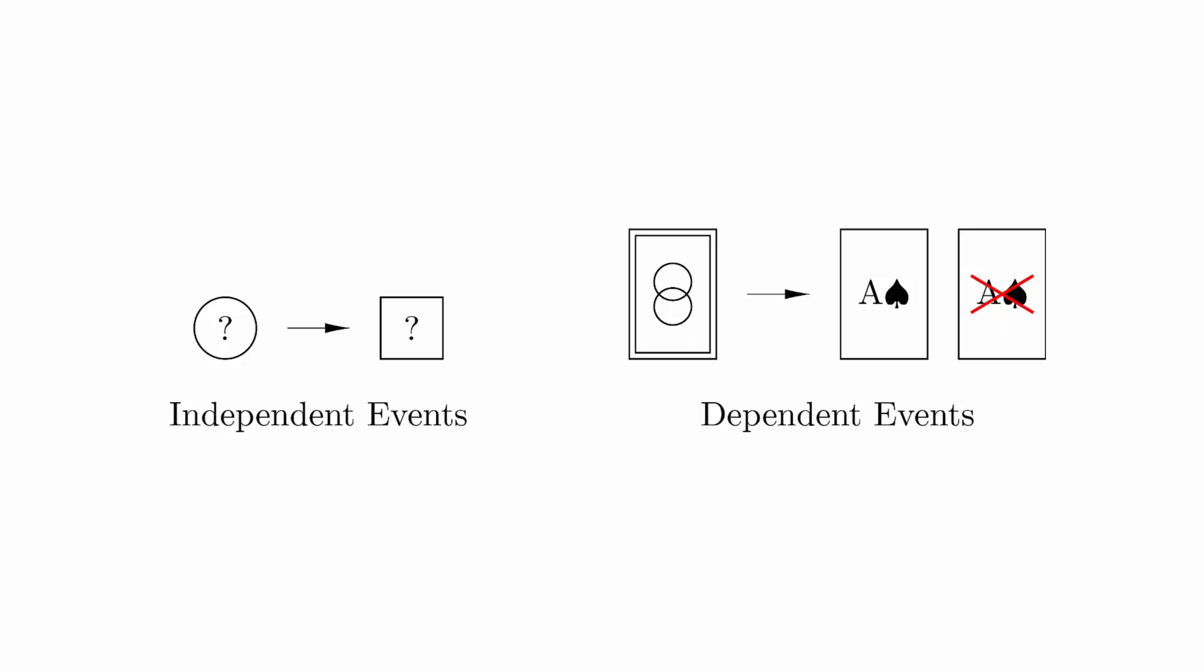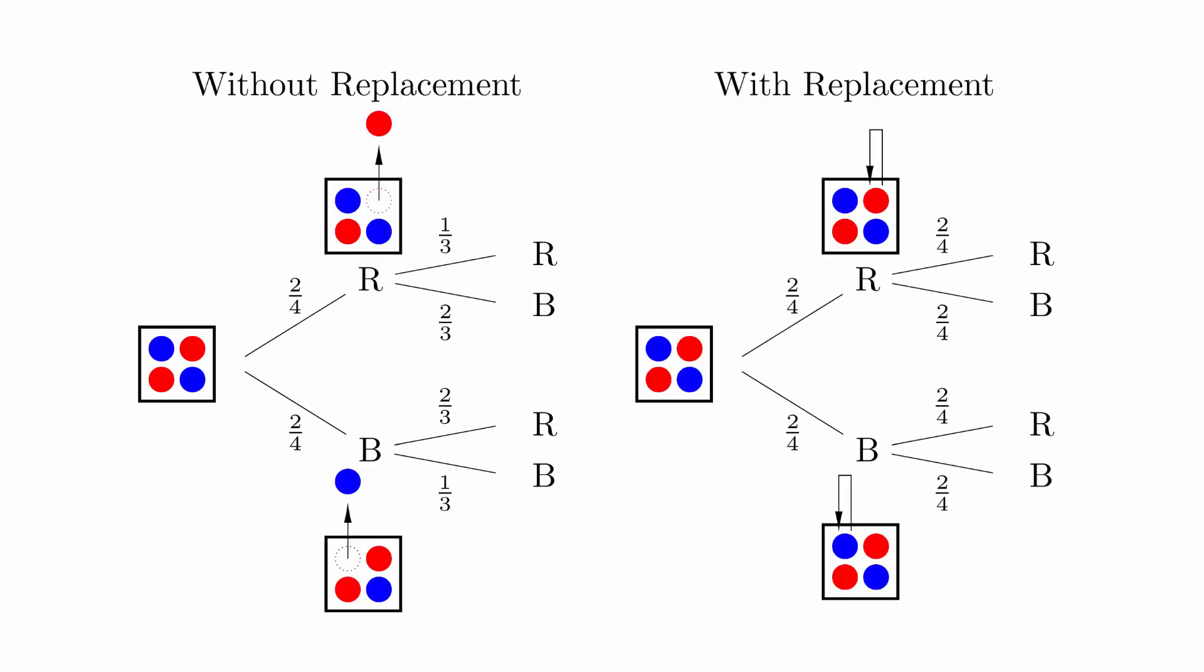We can use a probability tree to think about the nature of dependent and independent events. Suppose we have an urn that contains two blue balls and two red balls. Here are the probability trees for drawing with and without replacement.